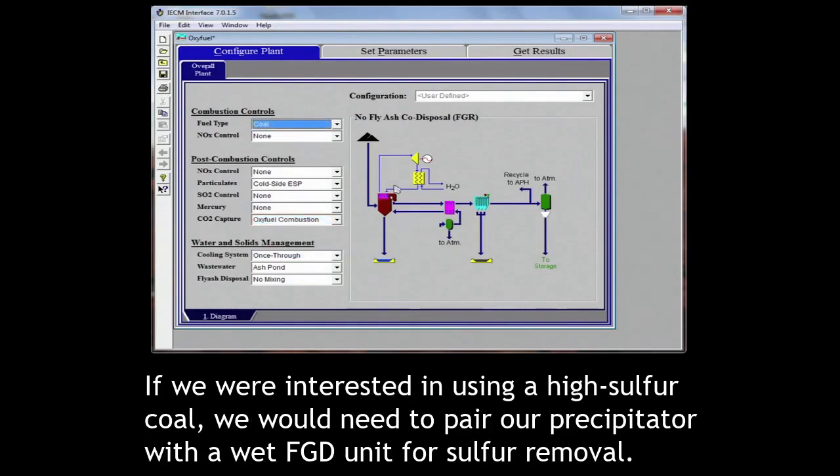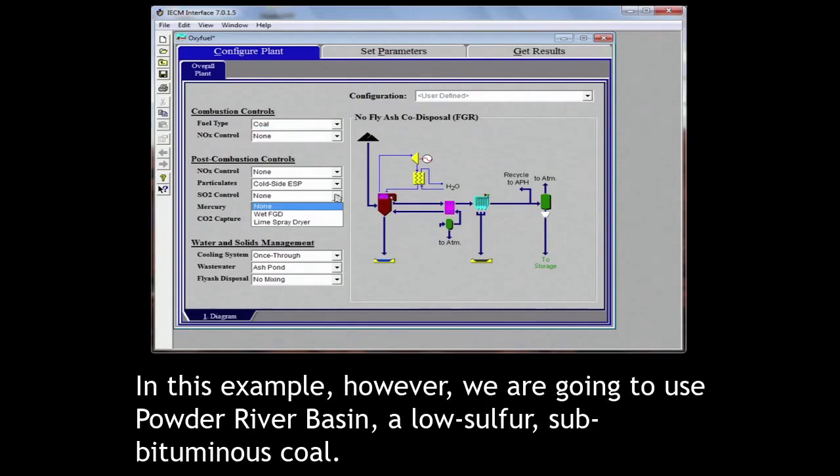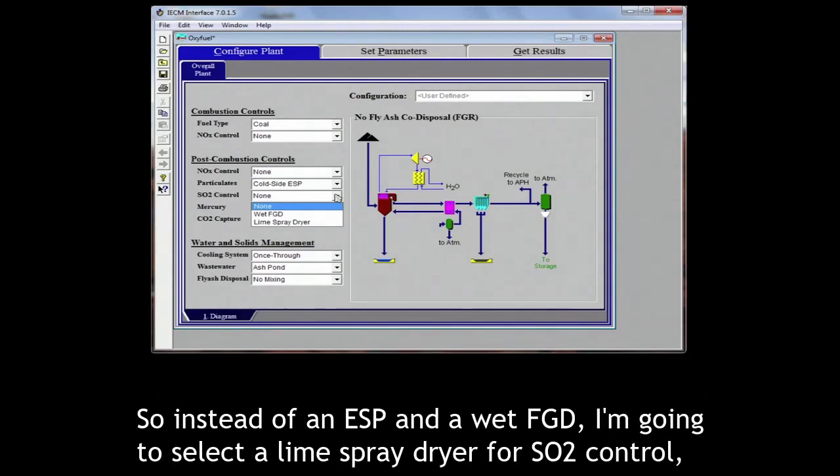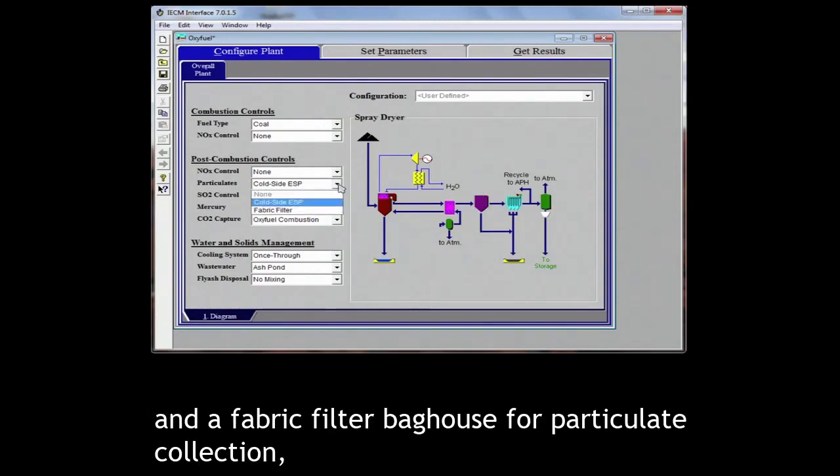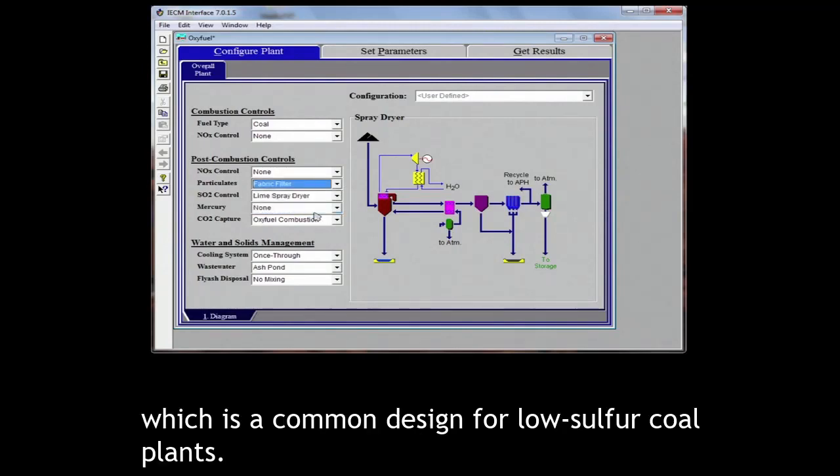If we were interested in using a high sulfur coal, we would need to pair our precipitator with a wet FGD unit for sulfur removal. In this example, however, we are going to use Powder River Basin, a low sulfur subbituminous coal. So instead of an ESP and wet FGD, I'm going to select a lime spray dryer for SO2 control and a fabric filter bag house for particulate collection, which is a common design for low sulfur coal plants.